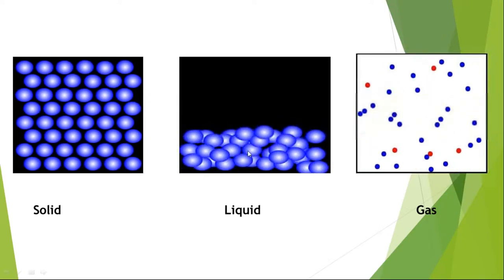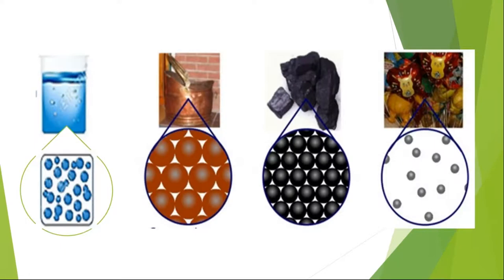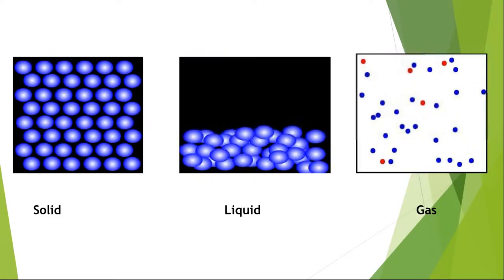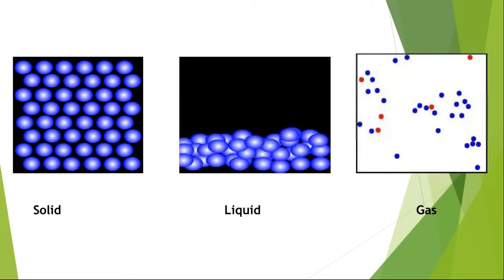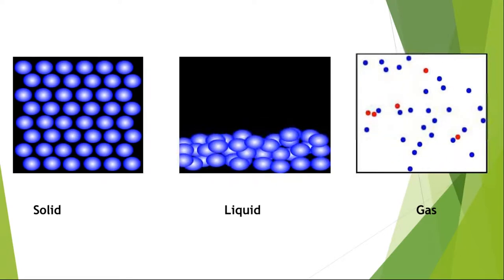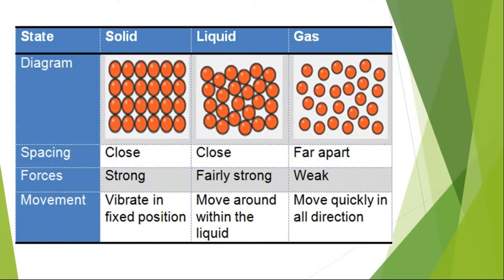With the aid of particle arrangement and the movement and motion of the particles, we can draw some conclusions for solids, liquids, and gases. Solid particles are close to each other — the spacing means the particles are close together. In a liquid, they are close to each other but not as much as solid particles. In gas, they are far apart from each other.